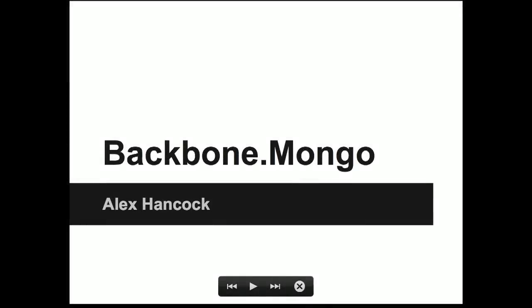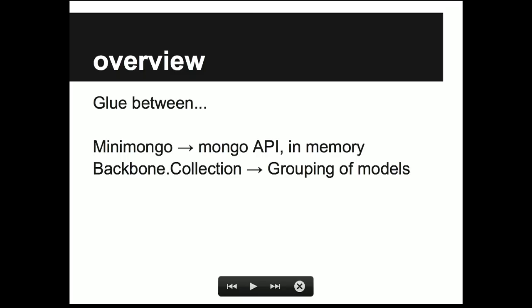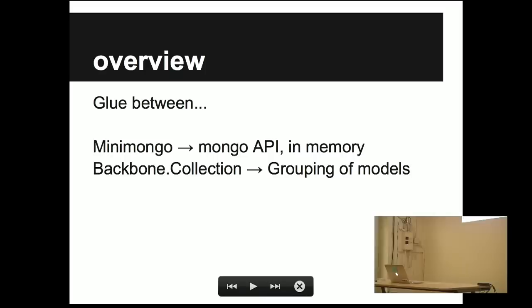Hi, everyone. I'm Alex. I'm here to talk about a project I worked on recently that combines two popular projects. One is the mini-Mongo framework that Meteor wrote, which is the in-memory MongoDB API implementation that you saw earlier, and Backbone.Collection, which is the popular Backbone framework's way of grouping models together. Basically, this is just a standard extension that lets you run ad hoc Mongo queries on all your data in a Backbone collection.